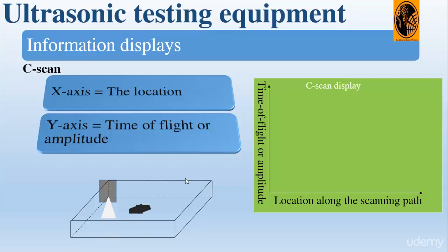You can see an example of a raster scan on this animation, and this is what we get on the screen. The x-axis indicates the location and the y-axis indicates the time of flight or the amplitude of the signal.